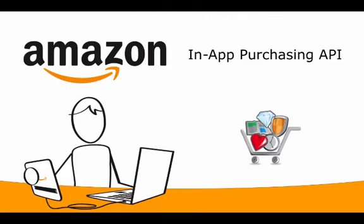Welcome to this Amazon Developer video on the Amazon App Store In-App Purchasing API. My name is Michael Hines and I'm a Technology Evangelist for the Amazon App Store. The In-App Purchasing API makes it easy for you to offer digital content and subscriptions such as in-game currency, expansion packs, upgrades, magazine issues and more for purchase within your apps. In this video, I'll walk you through how, within minutes, you can be up and running ready to give millions of Amazon customers the ability to purchase engaging digital content using their Amazon one-click settings.